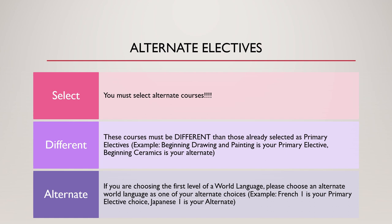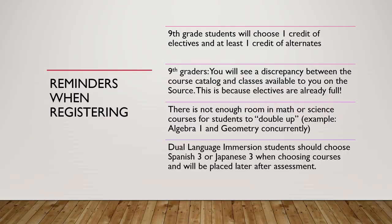Putting the same class as your primary and alternate doesn't give you a better chance of getting that course — it just means you'll end up in a random course if we don't have space, which is not what any of us want. For folks signing up for the first year of a world language, make sure that you have an alternate world language as one of your alternate choices. So if French 1 is your primary choice, either Japanese 1 or Spanish 1 would be your alternate. We normally have enough space for everyone, but we like to be clear just in case.